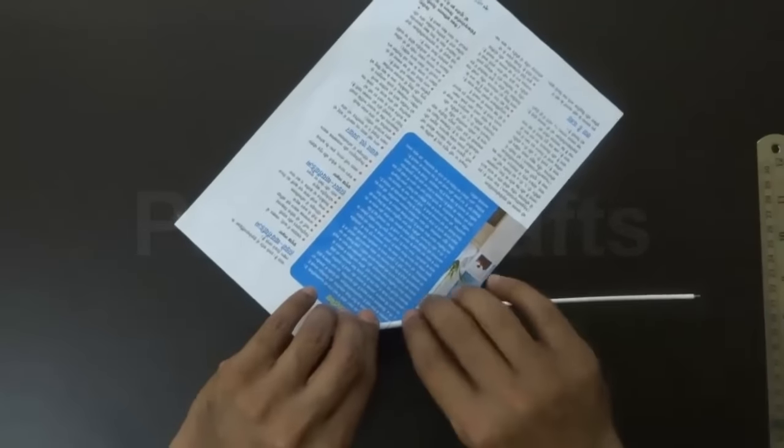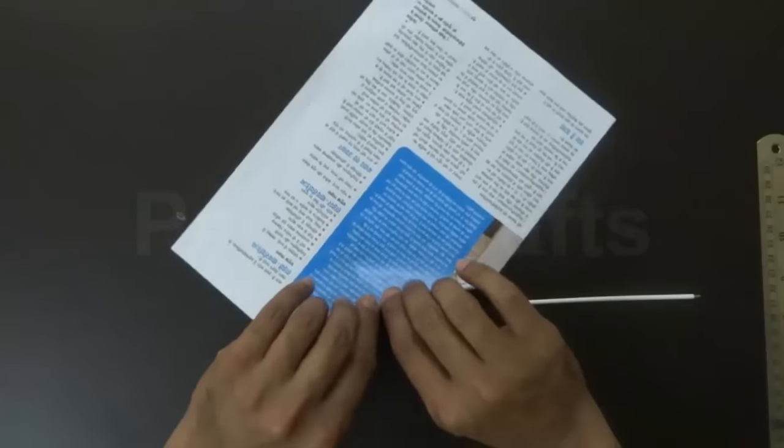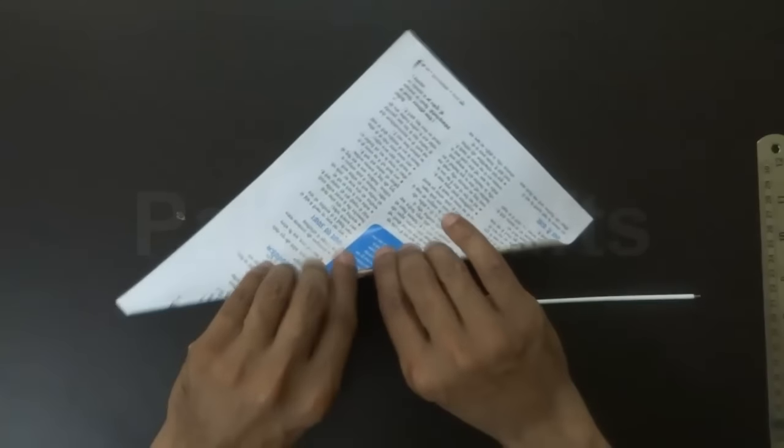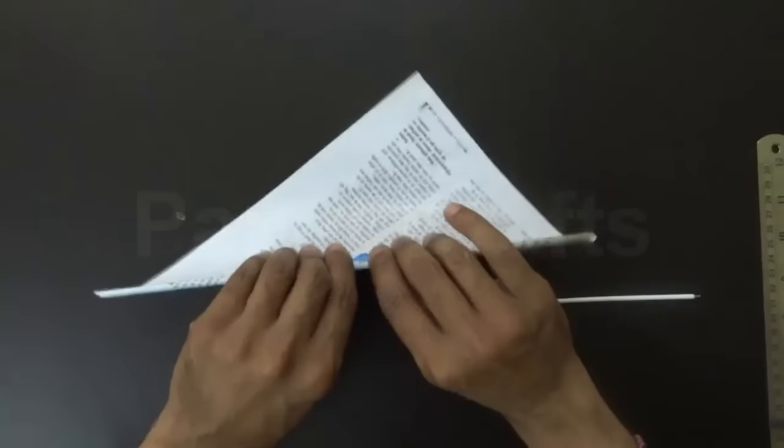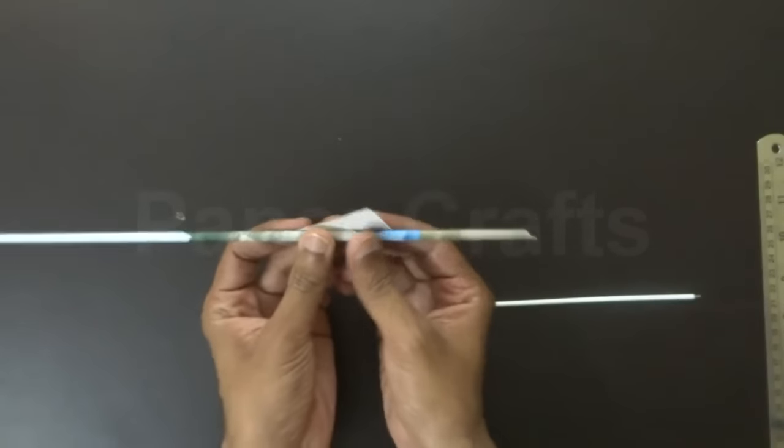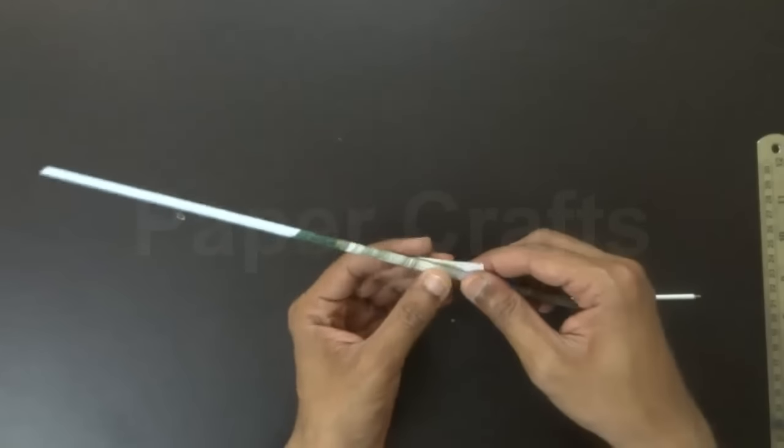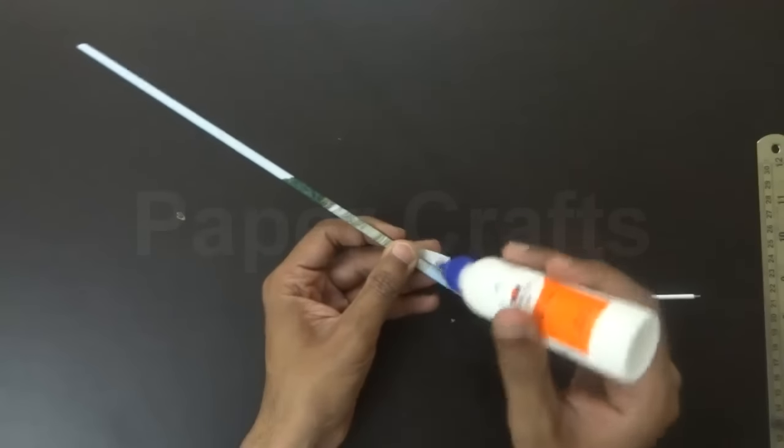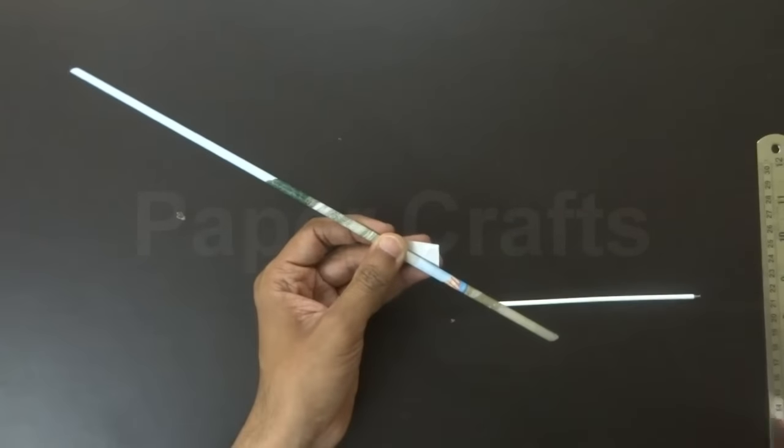Remove the pen from the center and keep on rolling the sheet. Roll the sheet so that it has an even width all over. At the end stick it with some glue.